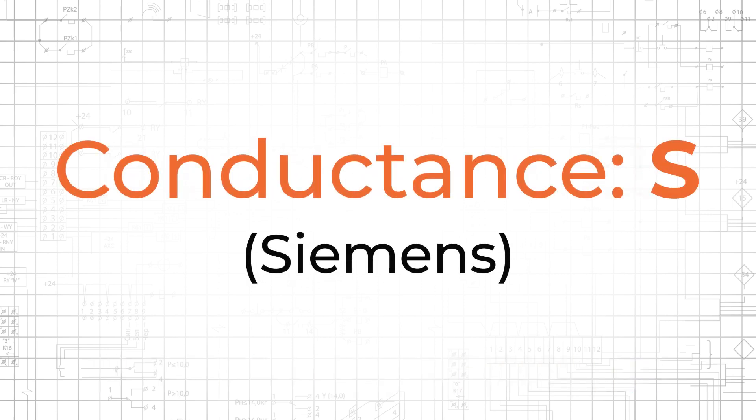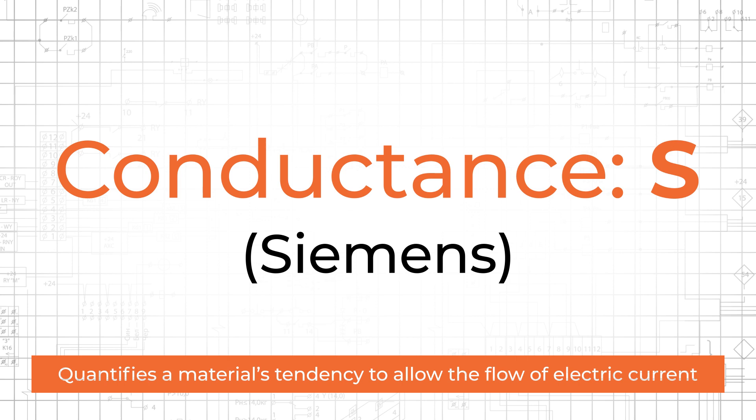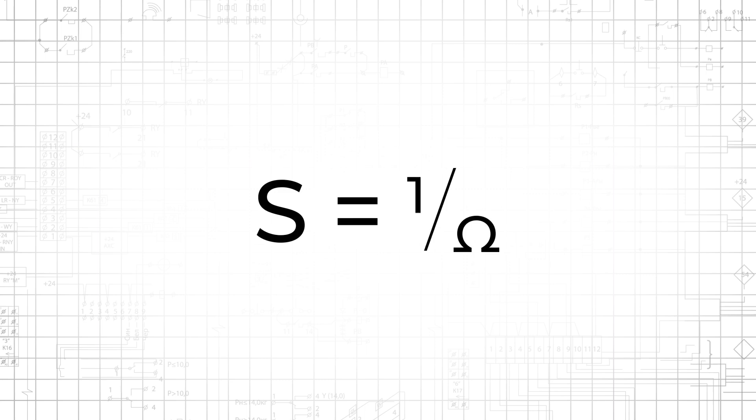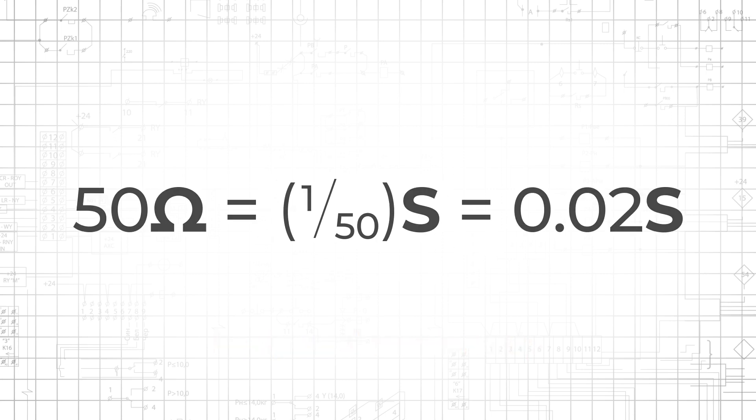A related unit, Siemens, quantifies a material's conductance or its tendency to allow the flow of electric current. Ohms quantifies resistance, and Siemens quantifies conductance, and the two have a reciprocal relationship. Thus, a 50 ohm resistor has a conductance of 1 over 50, or 0.02 Siemens.